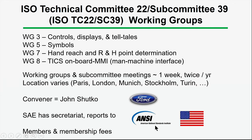They report their activities to ANSI, the American National Standards Organization. For the United States to belong to Subcommittee 39 and to ISO, ANSI pays dues to the International Standards Organization. So not only do these organizations need the sale of documents to survive, but they also need membership fees from those participating in ISO activities.